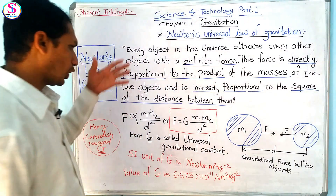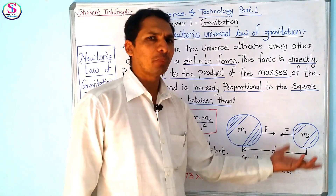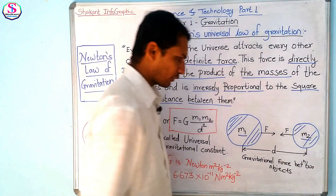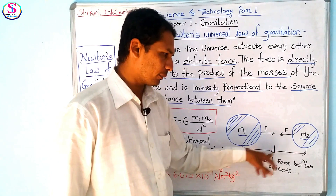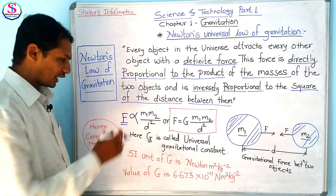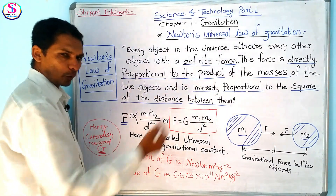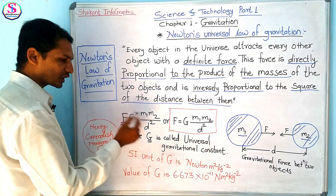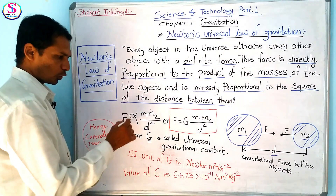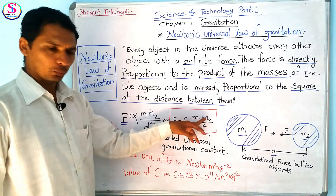From this law, look at this figure — it denotes the law. Two objects are shown, for example two planets, or a star and a planet, having masses m1 and m2, with a distance d between them. The law states that the gravitational force is directly proportional to the product of the masses m1 and m2, and inversely proportional to the square of the distance d between them.